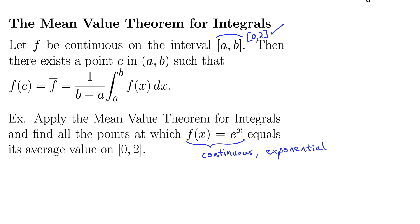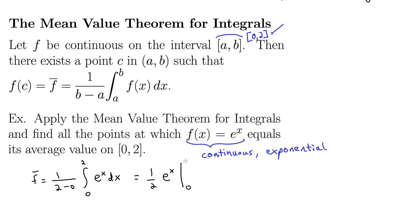There exists some point c in a, b such that f of c equals that integral. So let's evaluate this integral and find the average value. f-bar equals 1 over b minus a, so 1 over 2 minus 0, times the integral from 0 to 2 of e to the x dx. That gives us 1 half times e to the x evaluated from 0 to 2, which is 1 half times e squared minus e to the 0, which is 1. We can rewrite this as e squared minus 1, all over 2.